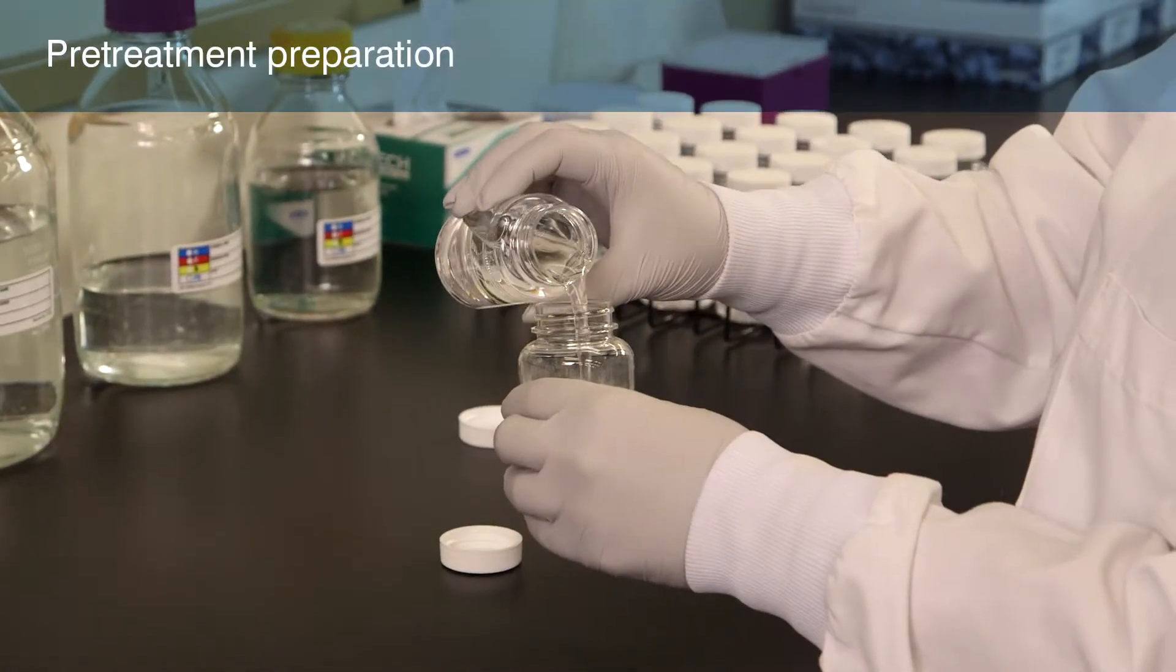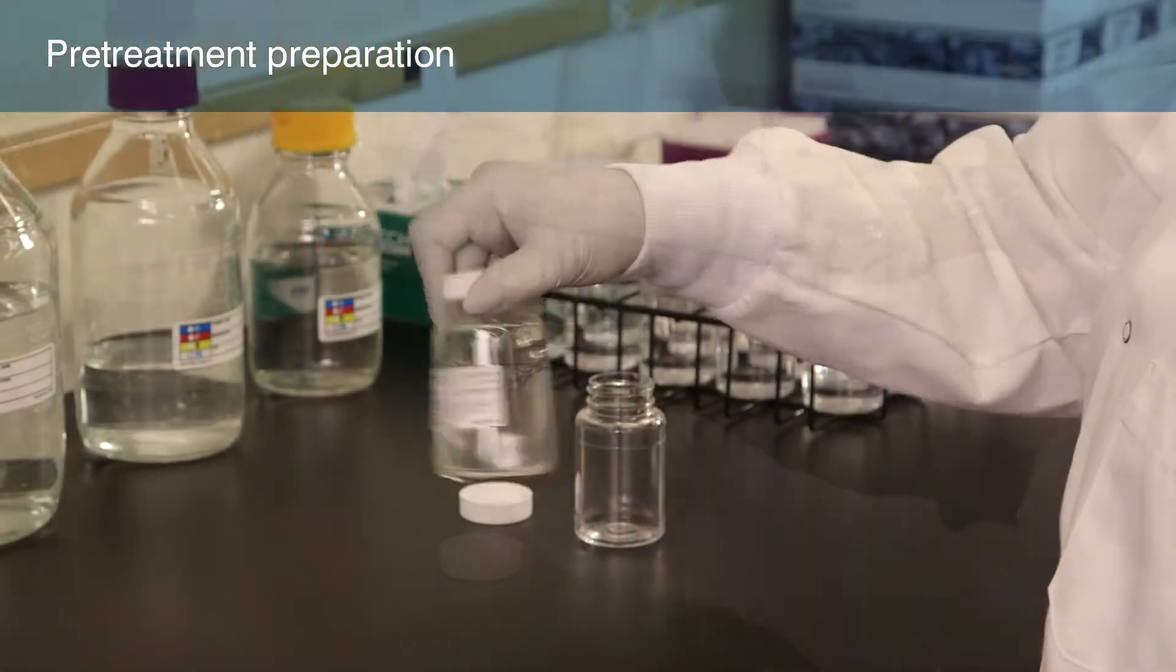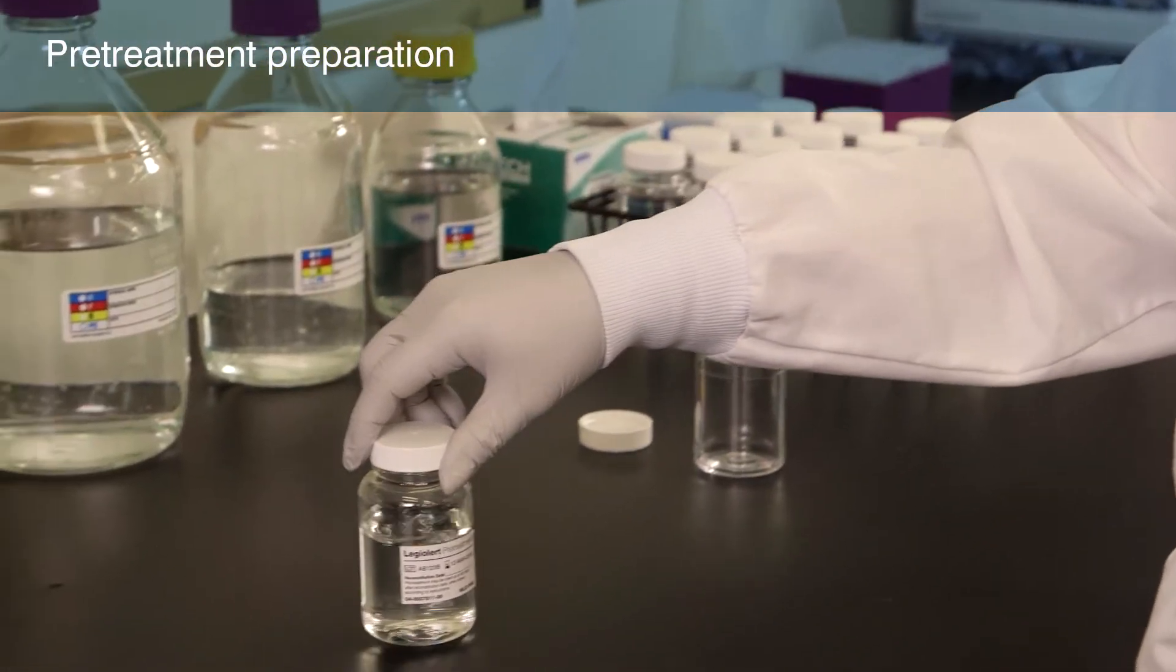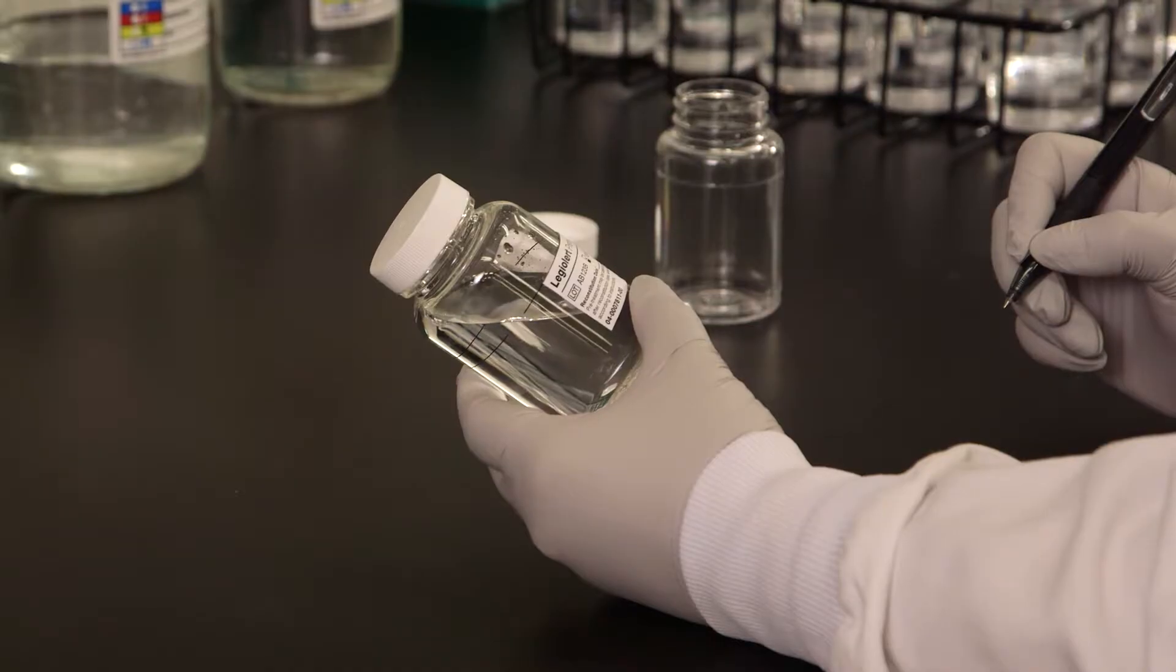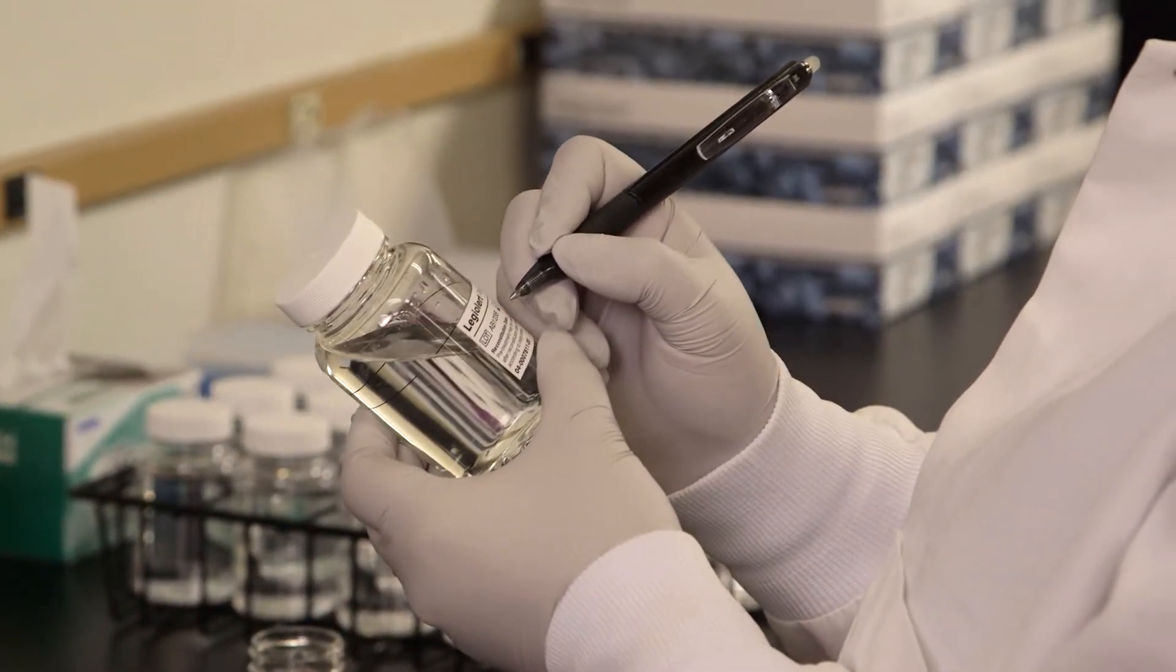Reconstitute the LEG-ALERT pretreatment by adding 100 mL of sterile DI water to the vessel and then shake until fully dissolved. Mark the preparation date on the bottle. Refer to the LEG-ALERT pretreatment product insert for more information.